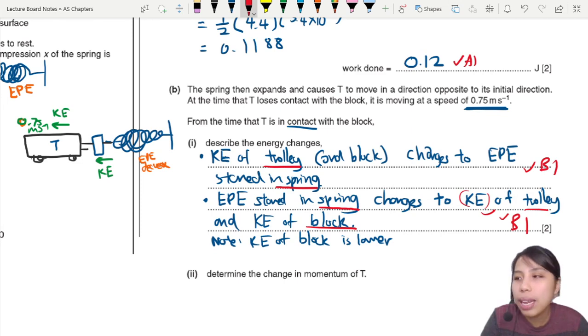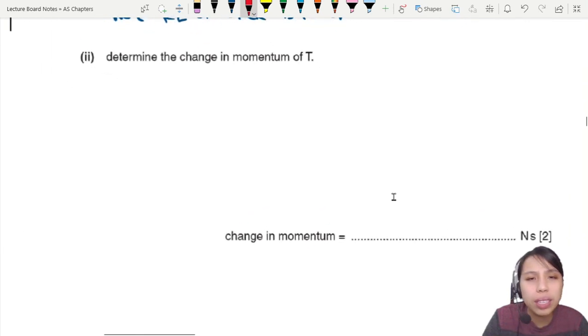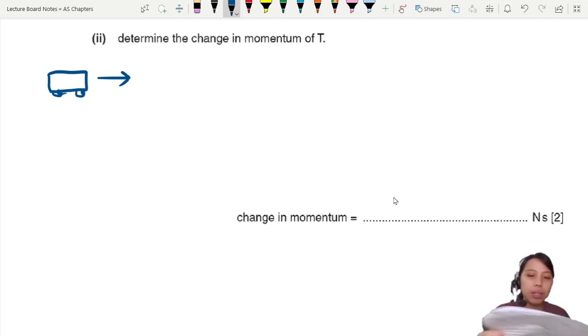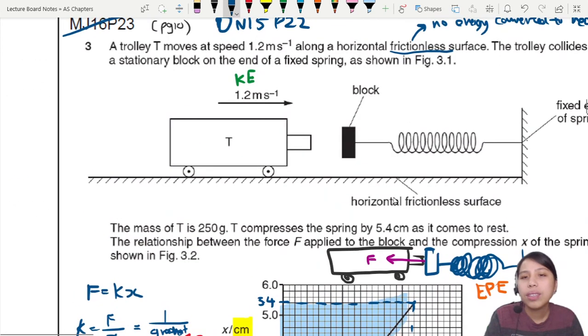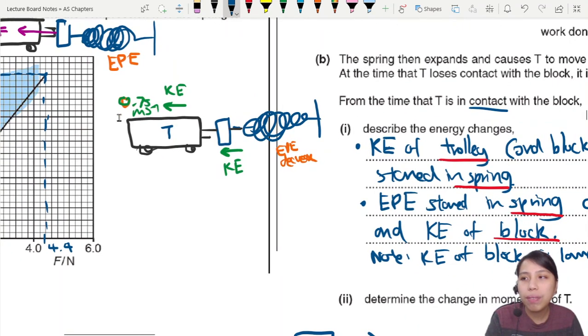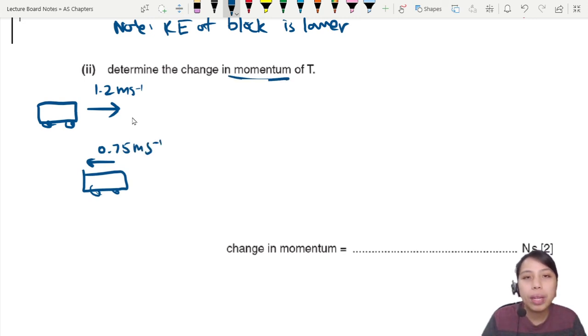We have to determine the change in momentum of T. Why is there a change? Because there's a change in velocity. When the trolley is happily moving along towards the spring, it's moving at 1.2 meters per second, but when going away it's at 0.75. You've changed your momentum. First one is 1.2, after collision it's moving to the left at 0.75 m/s.